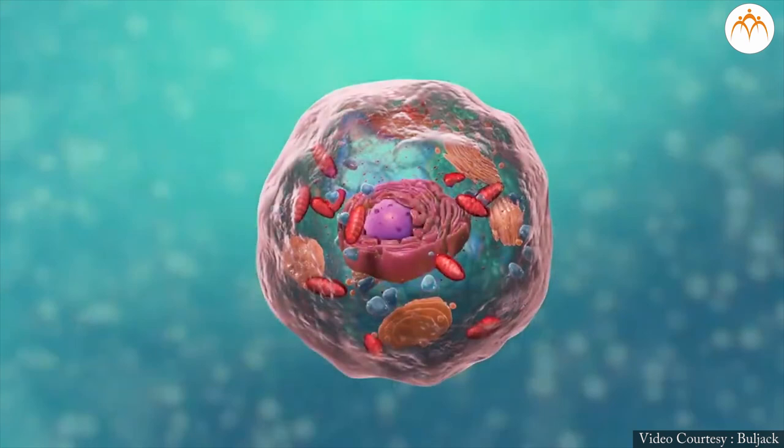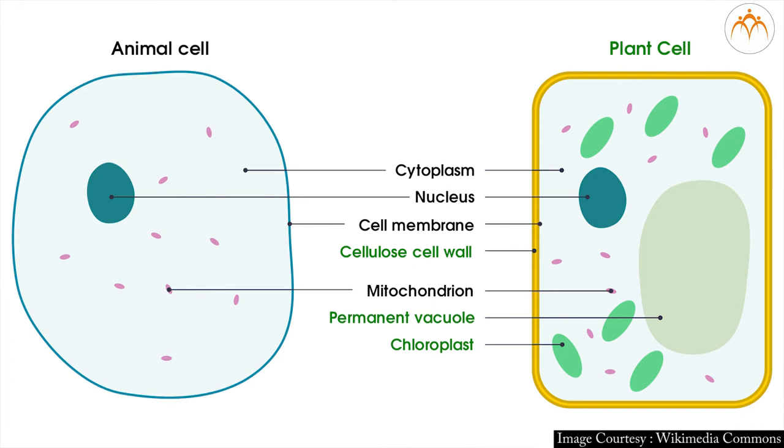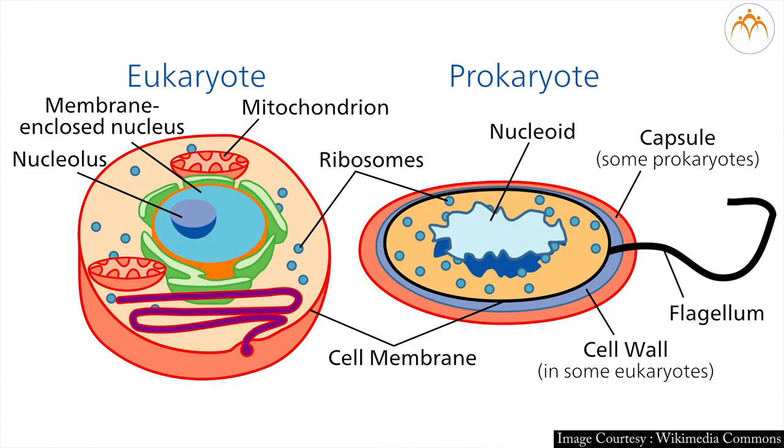I hope now you have understood major structural differences between prokaryotic and eukaryotic cells. Let us now revise the concepts that we have covered in this session. One, we have studied different types of cells based on various criteria. Two, we have focused on basic structural differences between plant cells and animal cells. Three, we have focused on explaining concepts of prokaryotic and eukaryotic cell types.